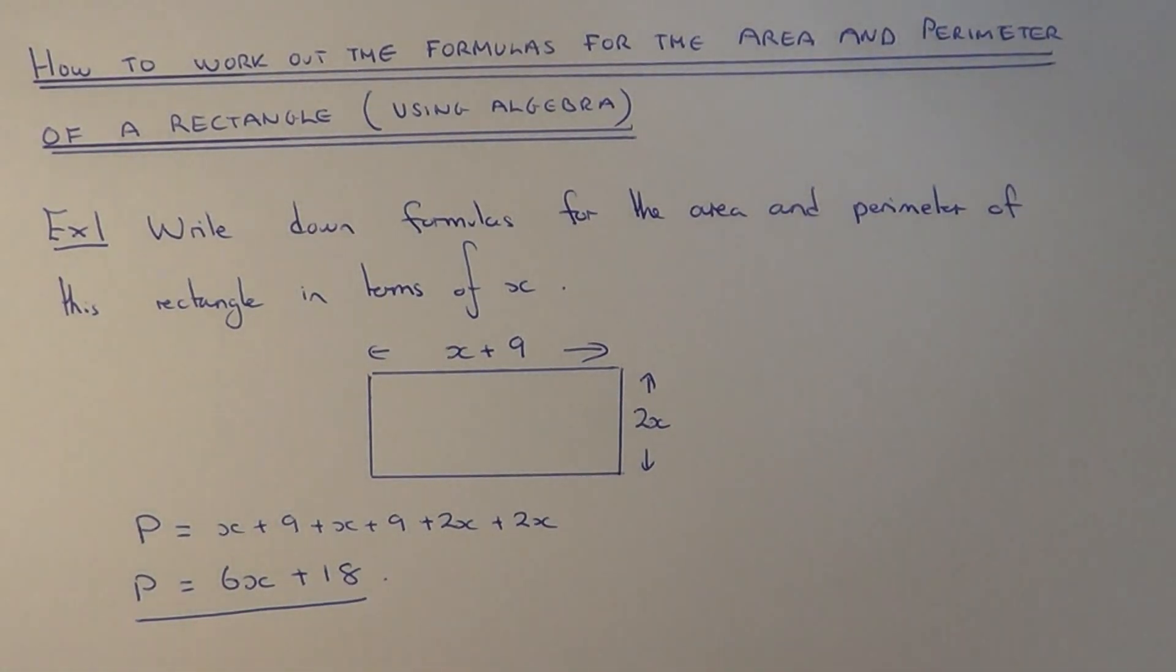So now let's work out a formula for the area. To find the area of a rectangle you multiply the length of the rectangle by the width.